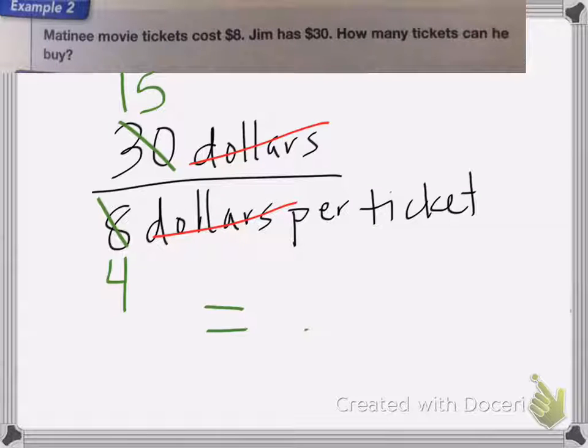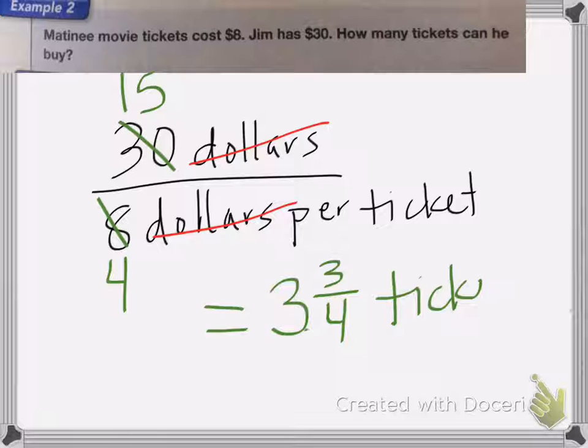15 fourths is the same as 3 and 3 fourths tickets. Now in this case, I cannot buy a quarter of a ticket. I can't buy three quarters of a ticket. And I can't buy four tickets, I can't round it up because I don't have enough money for four tickets. So I'm going to round this answer down to three tickets because I can't buy more tickets than I have money for.